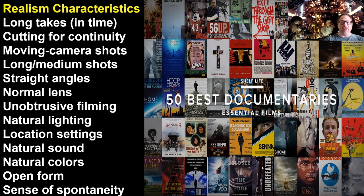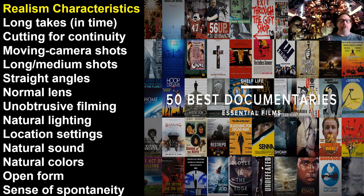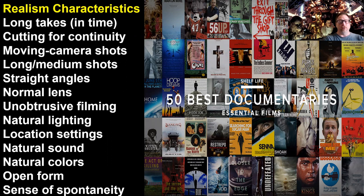We're going to have a moving handheld camera that follows them around, because in many cases we won't know where and when events are going to take place. We're going to have long and medium shots farther away so we can see the contextual framework. We're going to have a lot of straight angles at eye level, so we're not making value judgments. We're going to have a normal lens with not a lot of wide-angle or telephoto lenses — that way we get the idea of always being there, unobtrusive.